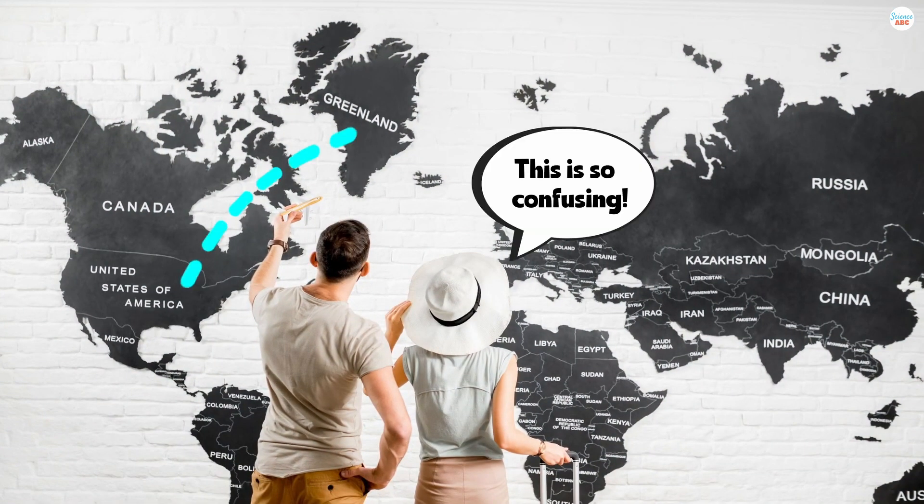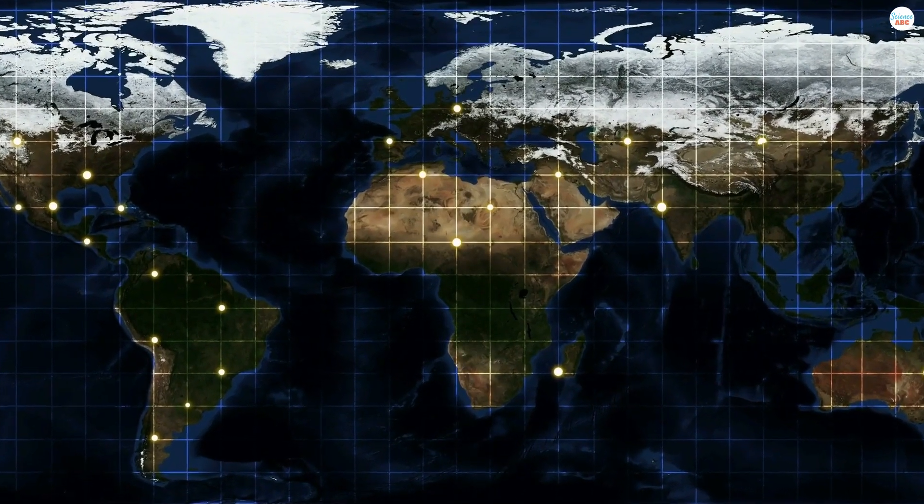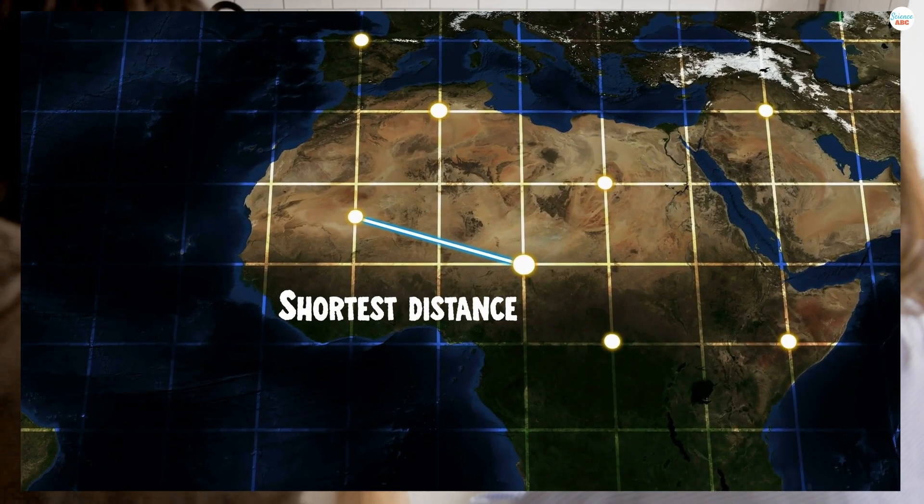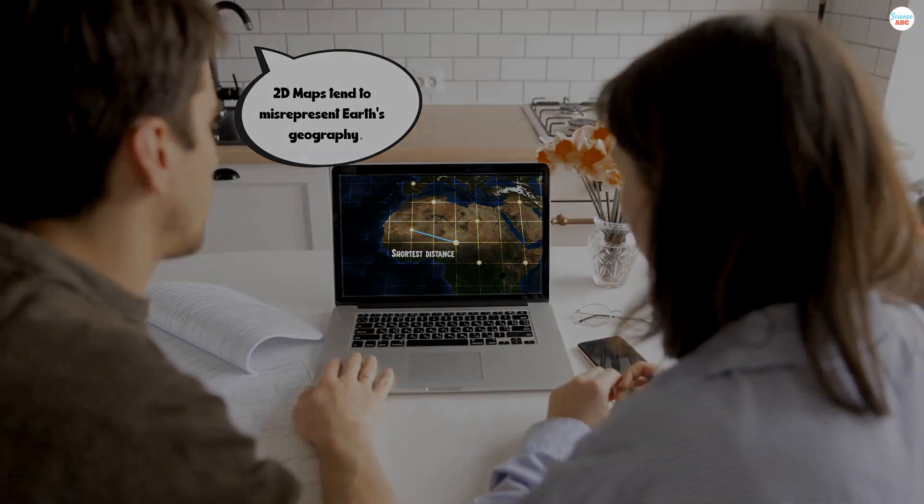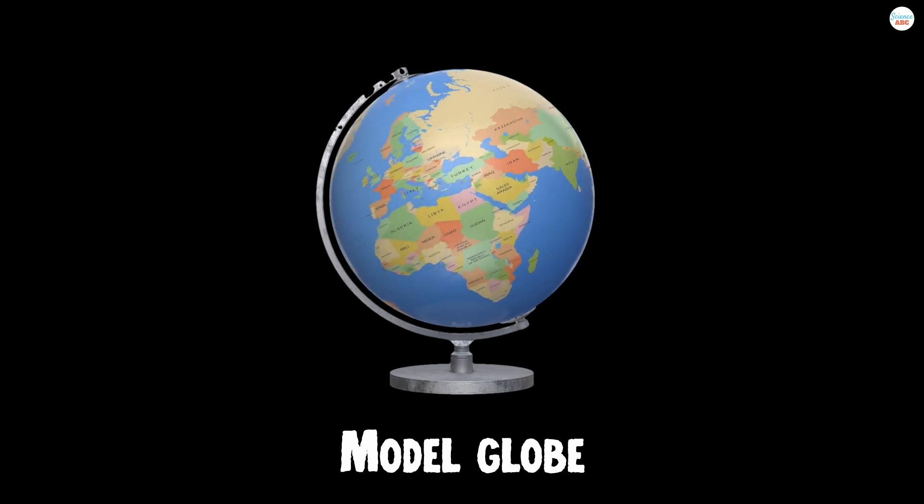These curved routes are often confusing as the routes are outlined on a flat two-dimensional map, where a straight line might appear to be the shortest distance. However, a two-dimensional map of the Earth can never be entirely accurate. Earth is a three-dimensional space and is best represented using a model globe.